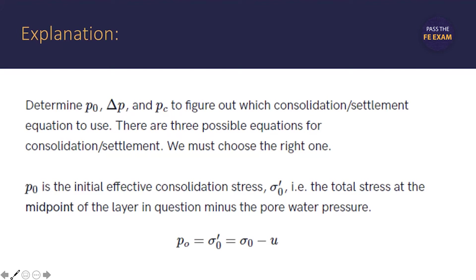So again, p0 is the initial effective consolidation stress, or the total stress at the midpoint of the layer in question minus the pore water pressure, and you can see the equation here.